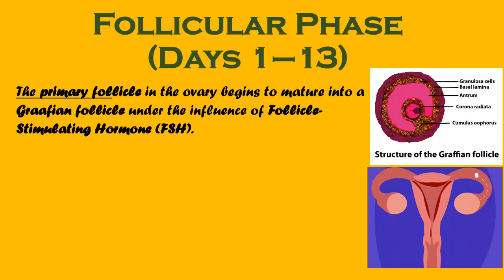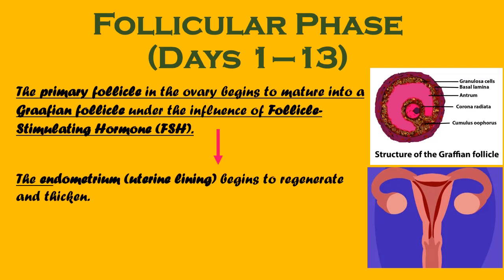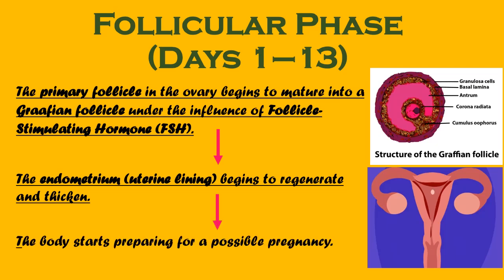Follicular phase, days 1 to 13: the primary follicle in the ovary begins to mature into a Graafian follicle under the influence of follicle-stimulating hormone, i.e., FSH. The endometrium, or uterine lining, begins to regenerate and thicken. The body starts preparing for a possible pregnancy.